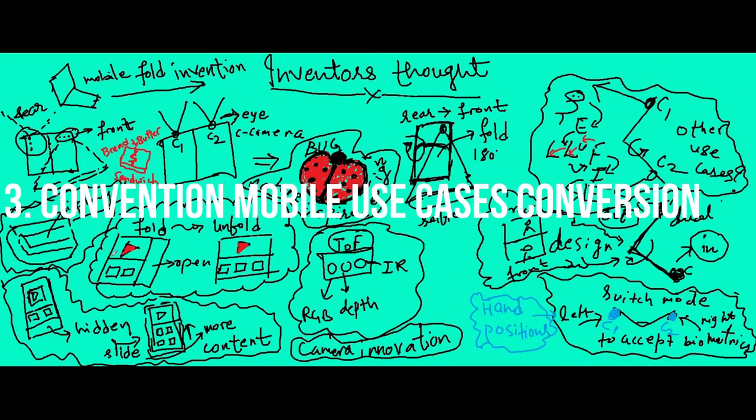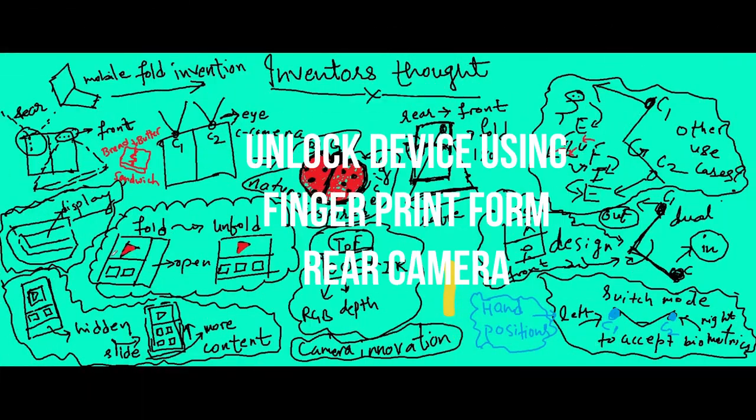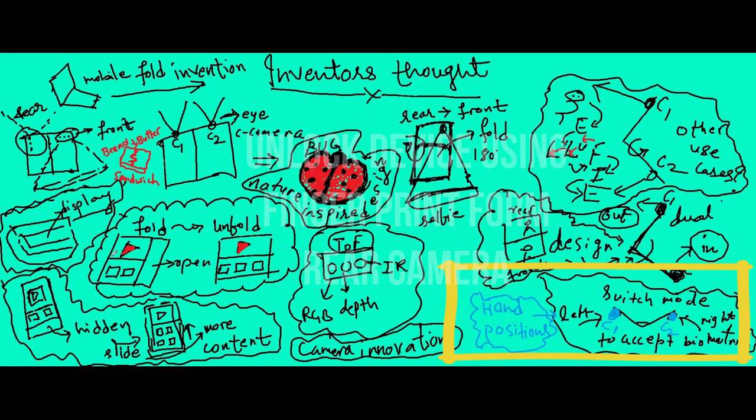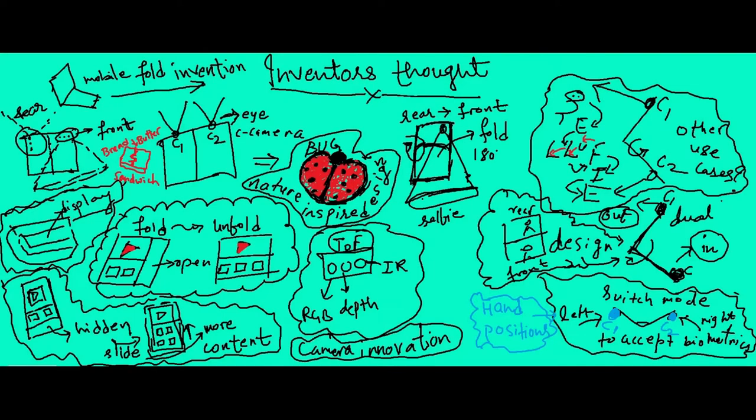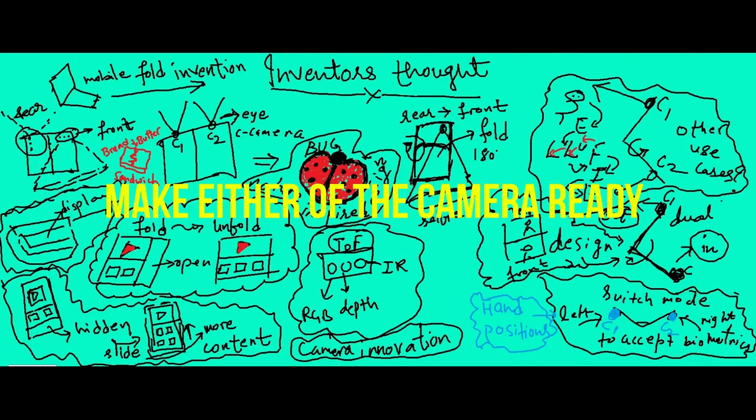In conventional mobile phones, one use case is unlocking the device from rear camera through fingerprint. Can you come up with the inventive step for the same depicted here? Puzzle here is to make camera ready for accepting biometrics intuitively, i.e., either C1 or C2 must be active.